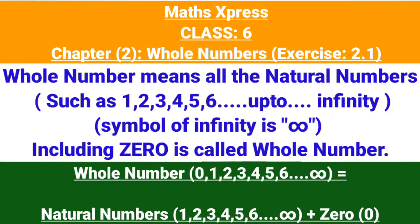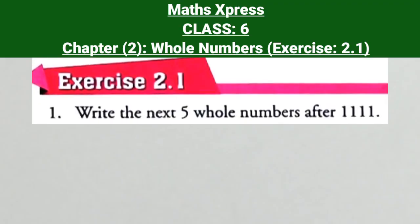Whole number means all the natural numbers such as 1, 2, 3, 4, 5, 6 up to infinity. These all numbers including 0 are called whole numbers.